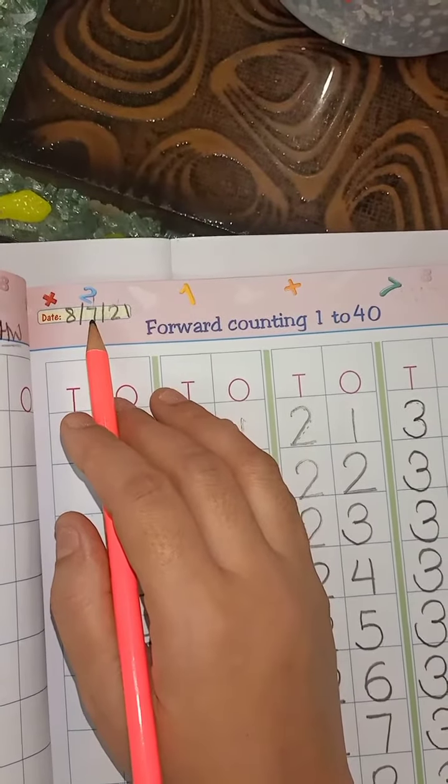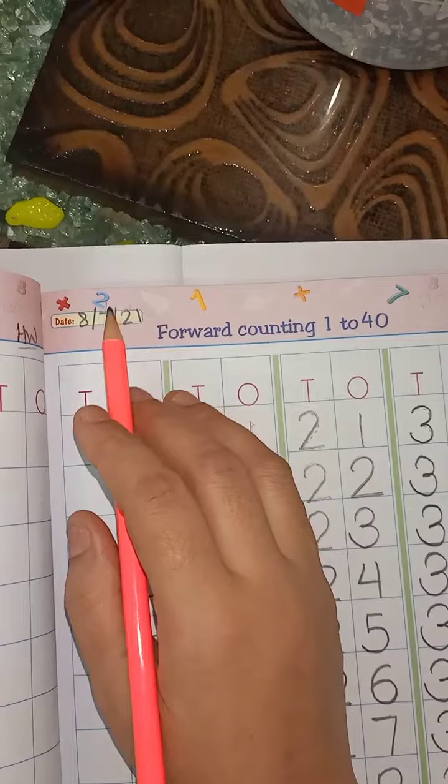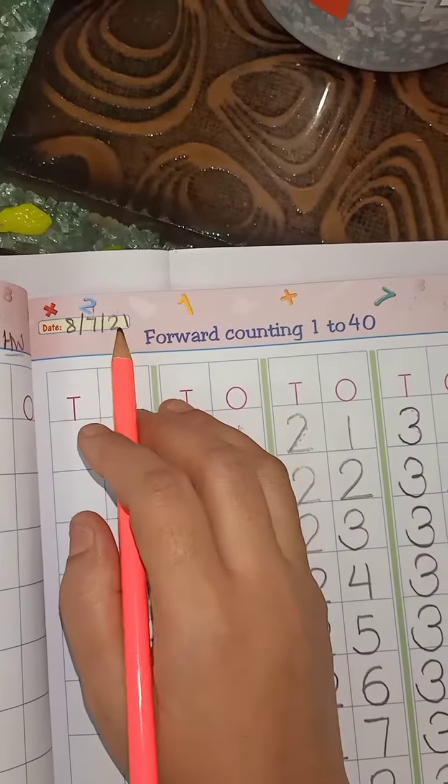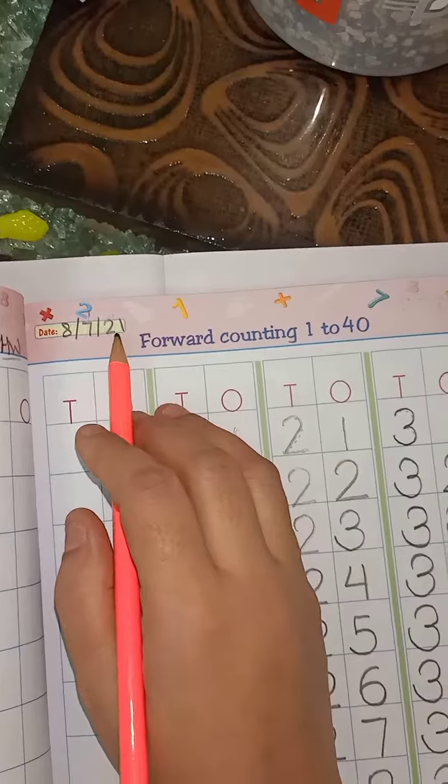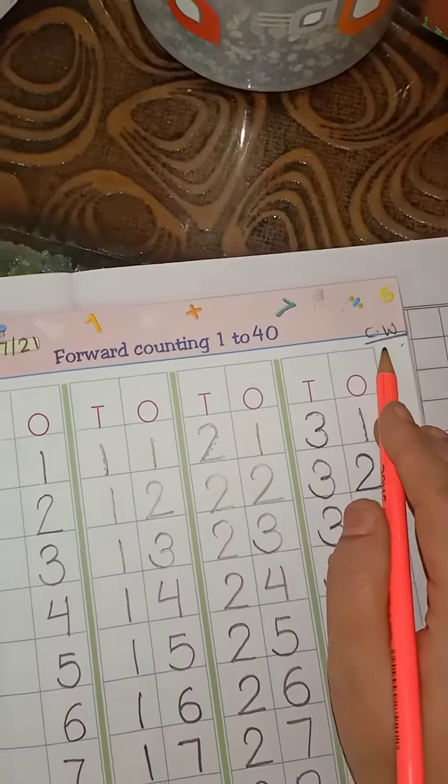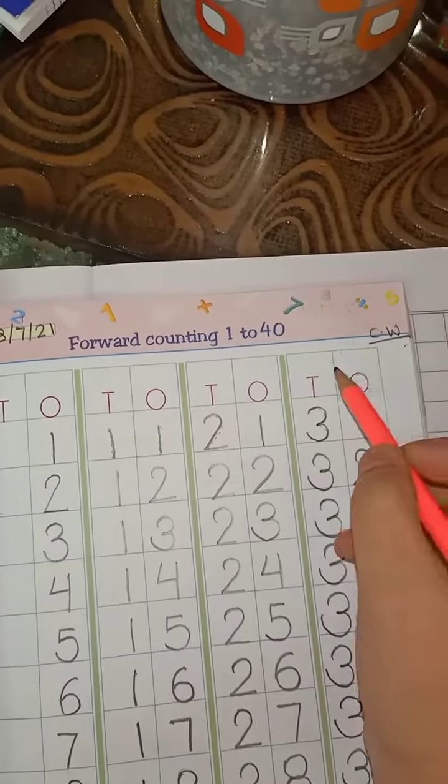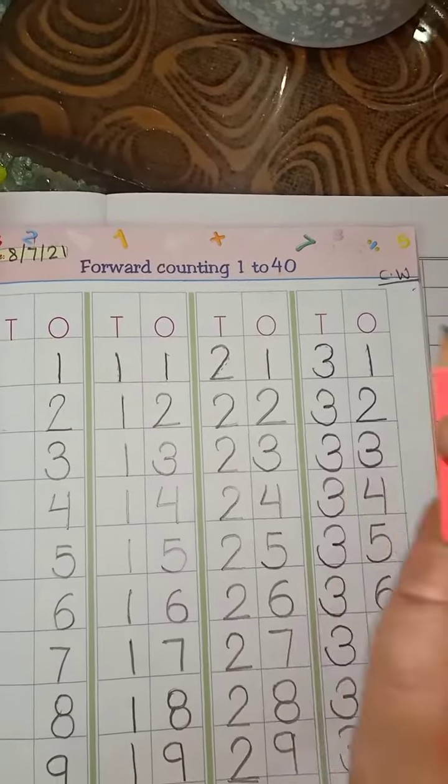Which month is going on? July, the 7th month of the year. So, write down 7, slanting line and which year is going on? 2021. So, write down 2, 1 and the classwork on the right side, homework on the right side of the page.